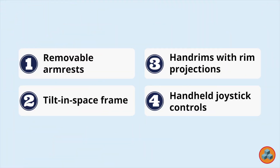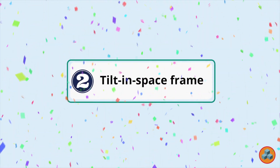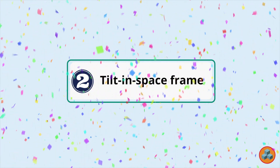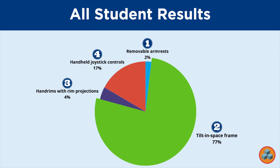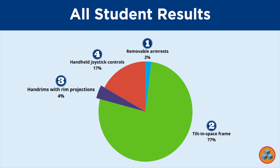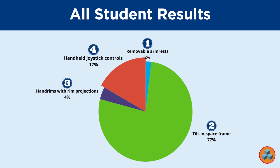The correct answer is option 2. Looking at the all-student data: 2% of students selected option 1, removable armrests; 77% of students selected option 2, tilt and space frame; 4% of students selected option 3, hand rims with rim projections; and 17% of students selected option 4, handheld joystick controls.